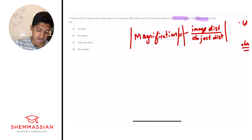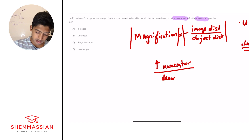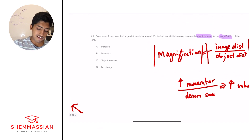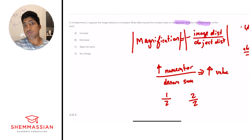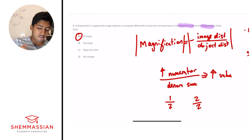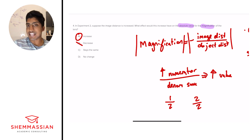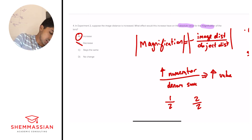Increasing the numerator while keeping the denominator the same increases the value — for example, one-half is 0.5, but two-halves is 1. So increasing image distance results in increased magnification, and A is our answer. Decreasing image distance or increasing object distance would decrease it, eliminating B. Keeping both unchanged or changing them at the same rate would leave magnification the same, eliminating C and D.